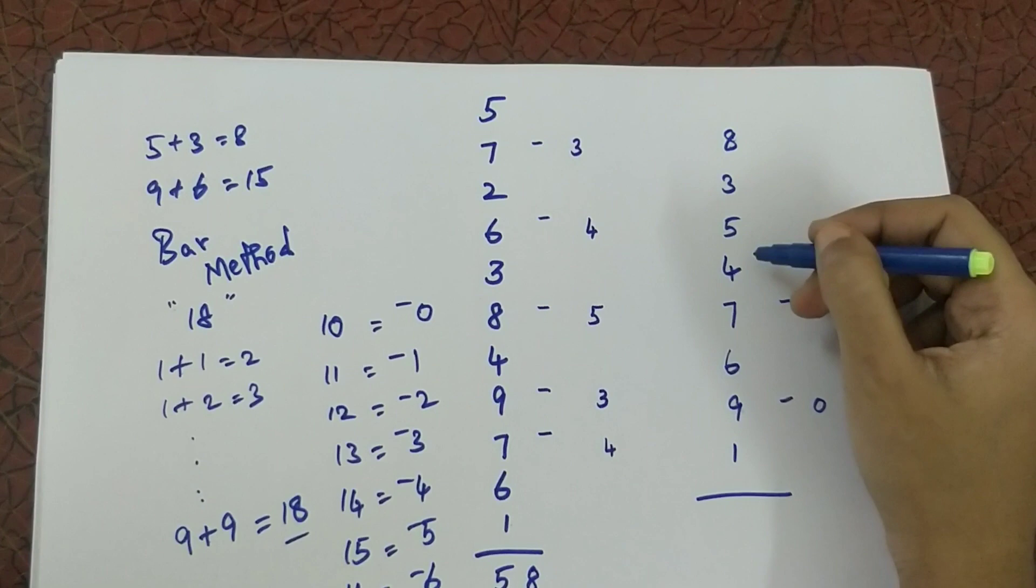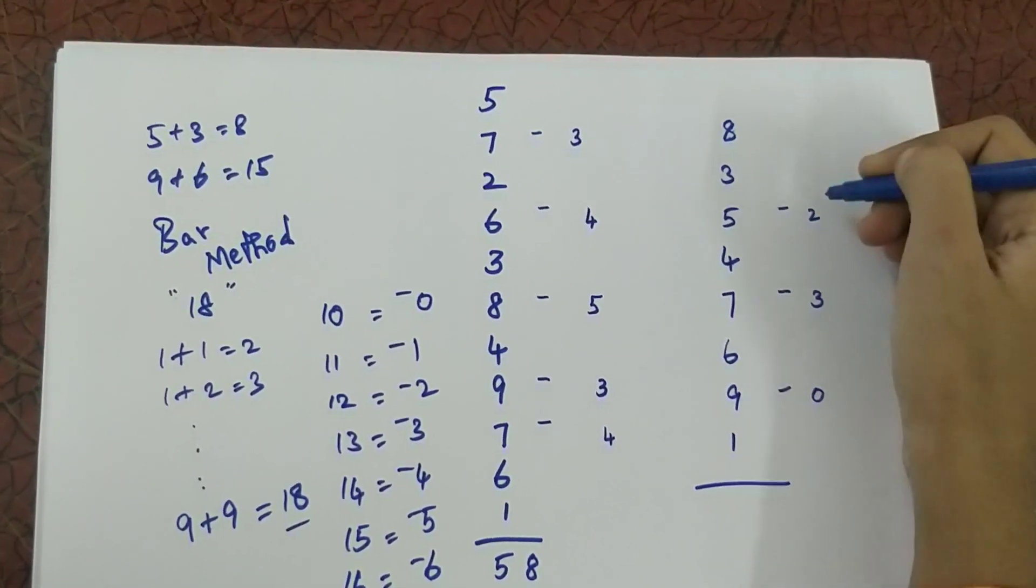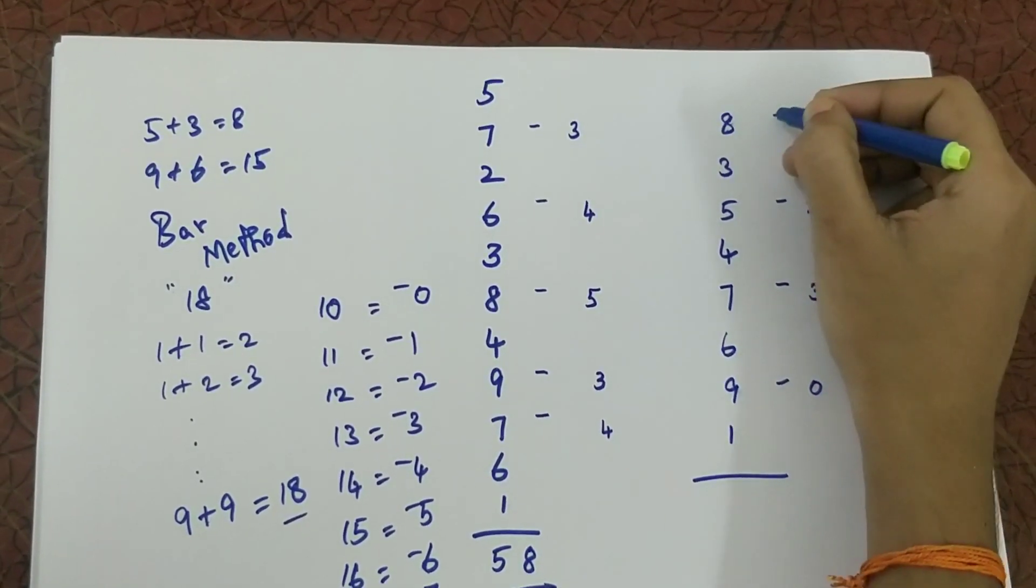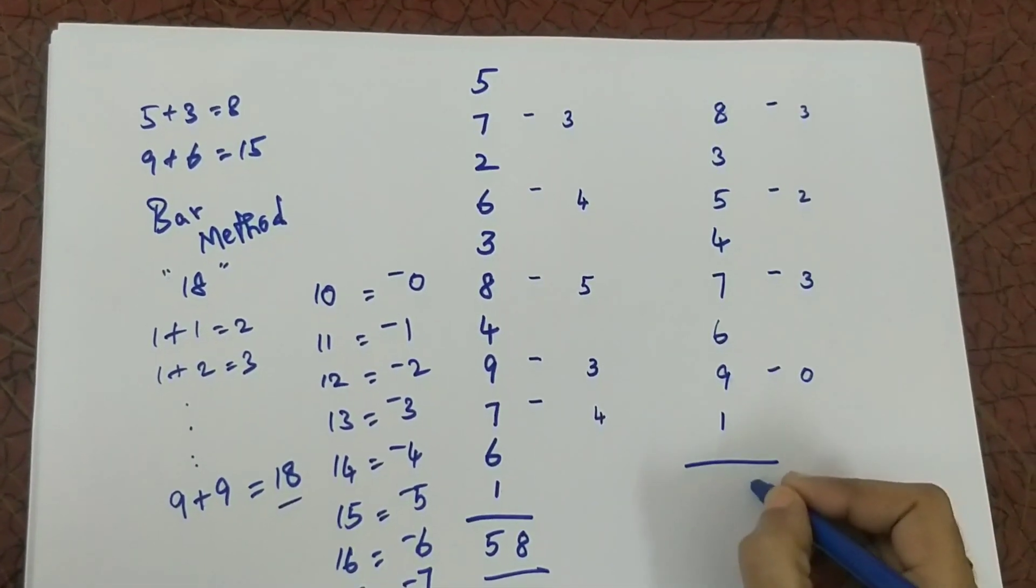3 plus 4 is 7. 7 plus 5 is 12. 2 plus 3 is 5. 5 plus 8 is 13. So again I need to add here. So my answer now is 3.